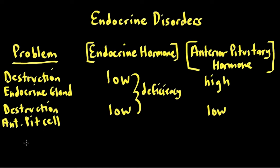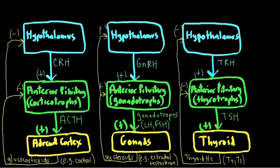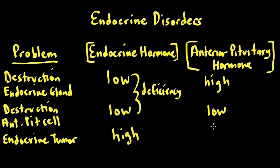We can also have tumors producing excess hormone — a common cause of excess states. If there's an endocrine gland tumor, we'd start with the endocrine hormone being high. Looking at the feedback loop, if the tumor is in the adrenal cortex, gonads, or thyroid, those cells make hormone uncontrollably and suppress the anterior pituitary. Despite the anterior pituitary hormones being low, the output is still high because the problem originated in the endocrine gland. So the anterior pituitary hormone is low — suppressed by the high endocrine hormone — while the endocrine hormone itself remains high.